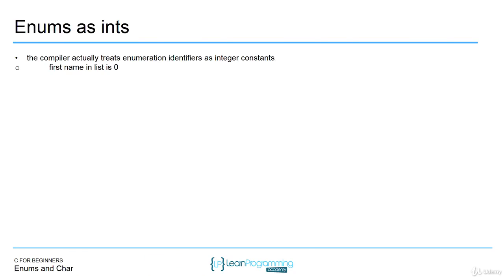Under the hood, as far as how enums are implemented in the C programming language, they're really represented by numbers. The compiler actually treats enumeration identifiers as integer constants. So the first name in the list that you define, if you were to try to print out the value, it'd be zero. If we have enum month this_month and we set this_month equals February, this_month is actually going to be equal to an integer, but we can still compare it against February. If you print out this_month to the console, it would actually be an integer value corresponding to when it was defined in the list.